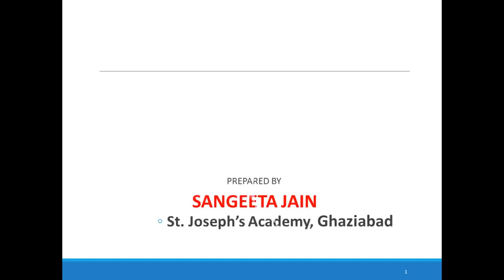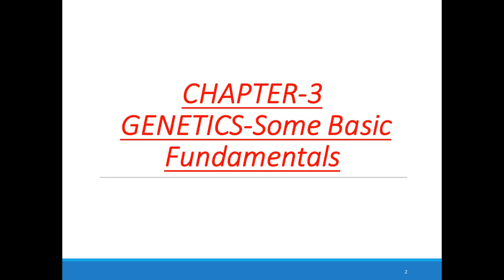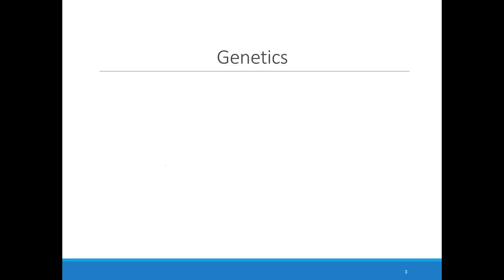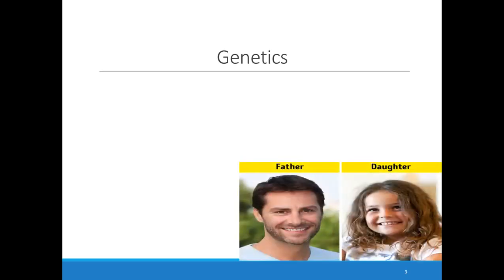Hello students. In this video I am going to explain chapter 3, genetics — some basic fundamentals. You might have heard that you got height from your father and fair complexion from your mother. Take a look at this photo. Can you see that the color of the child's eye is just like her father, but father's hairs are straight while daughter's hairs are curly?